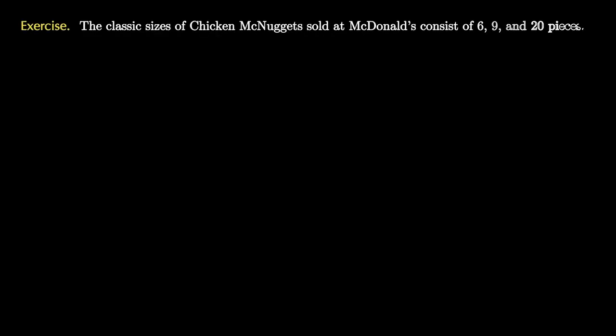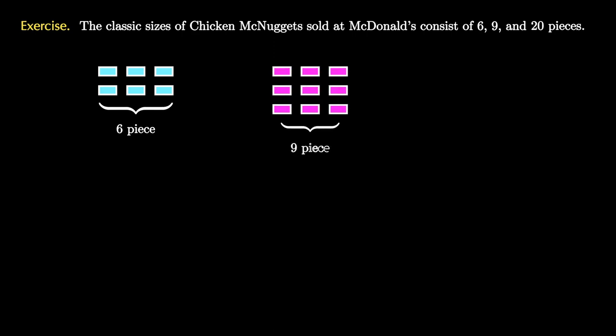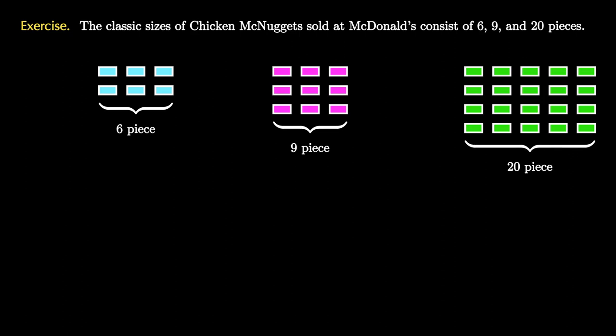Let's end this video with a challenge problem known as the chicken McNugget problem. The classic sizes of chicken McNuggets that were sold at McDonald's were those of size 6, 9, and 20 pieces. So we can think of a six-piece McNugget as six blocks, we can think of a nine-piece Nuggets as nine blocks, and we can think of a 20-piece Nuggets as 20 blocks, as pictured here.